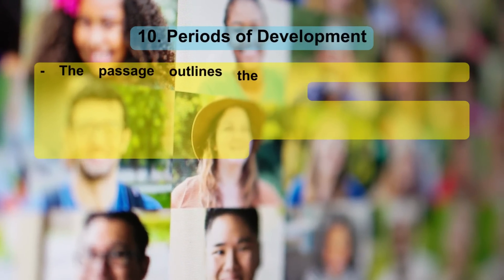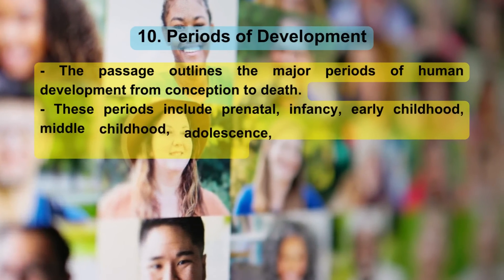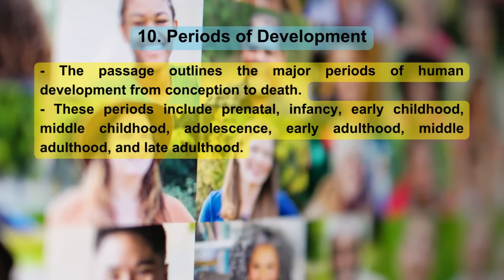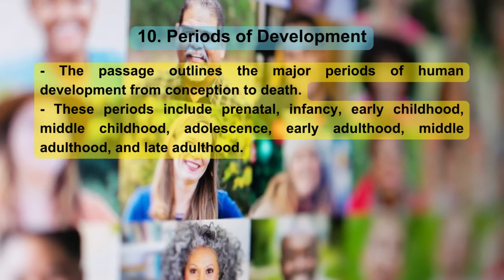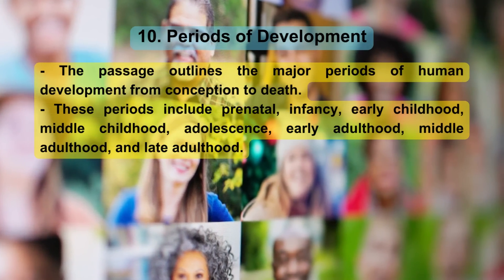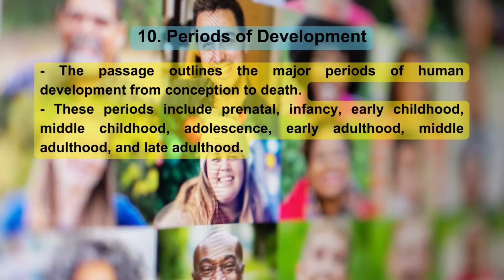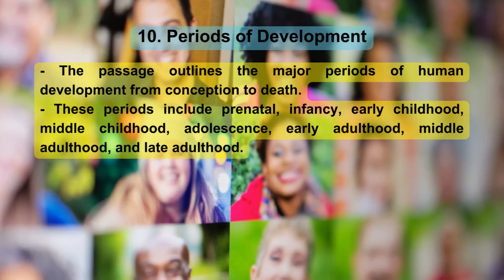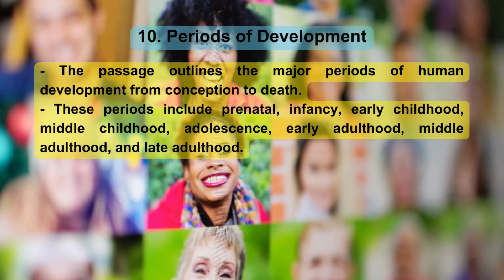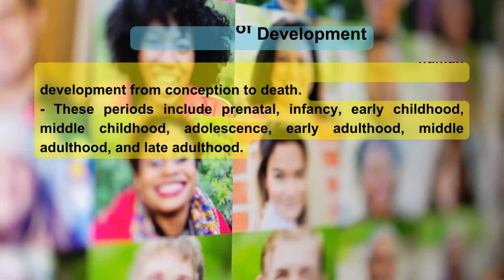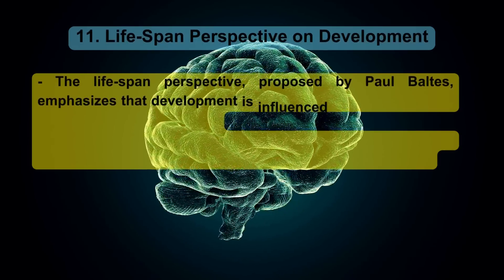Periods of development: The passage outlines the major periods of human development from conception to death. These periods include prenatal, infancy, early childhood, middle childhood, adolescence, early adulthood, middle adulthood, and late adulthood.